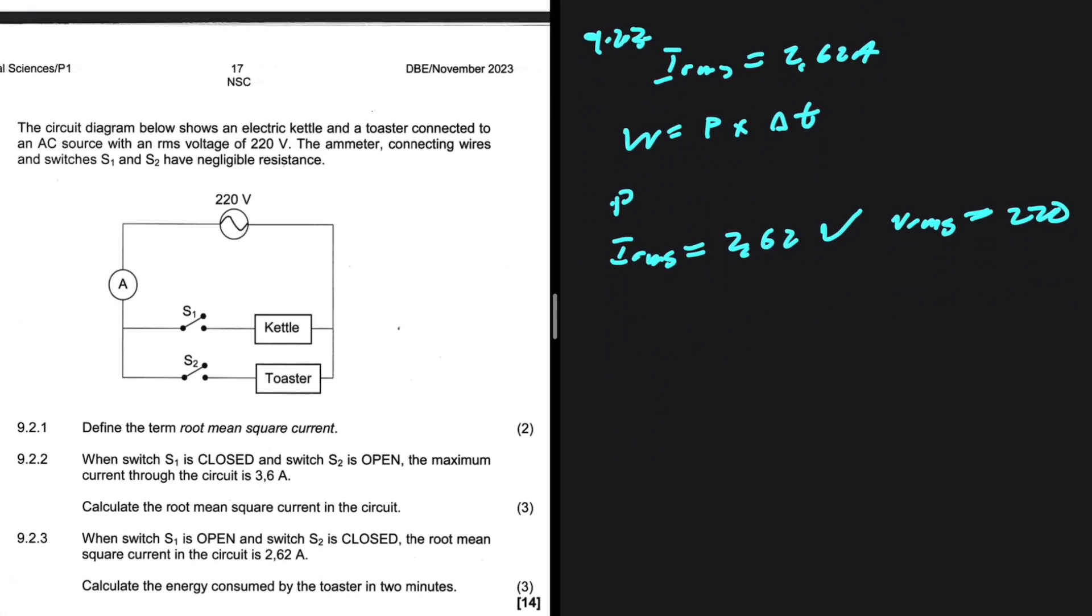So, we can just go ahead and find the power by saying VRMS multiplied by IRMS. Obviously, you can find the resistance first, which is sort of wasting your time because you don't have to do that. But if you do it, there is no problem. So, we can find the power using that. And then the time, we have 2 minutes, which is just 120 seconds.